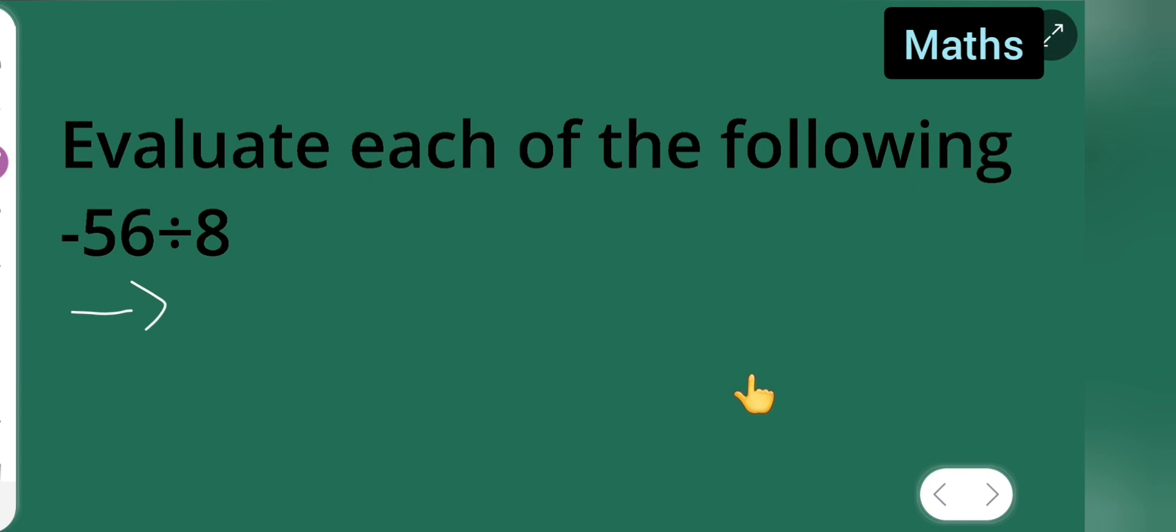So here, -56 ÷ 8. Instead of divide, put multiply by 1/8. Basically, you have taken the reciprocal of 8, which is 1/8. Instead of dividing, put multiply sign, then take the reciprocal.